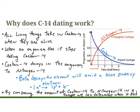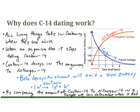By comparing the amount of carbon-14 to nitrogen-14 in a sample, we can determine when that object died. At the start, the object is at 100% carbon-14 and 0% nitrogen-14. After one half-life, the amounts of nitrogen-14 and carbon-14 are equal. At the second half-life, carbon-14 has decreased by the rate that nitrogen-14 has increased, and that pattern continues until there is no more carbon-14 and only nitrogen-14 remains.